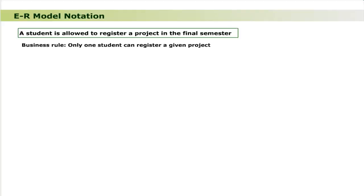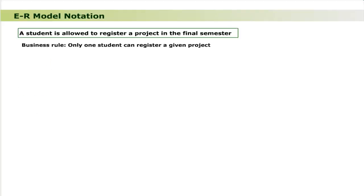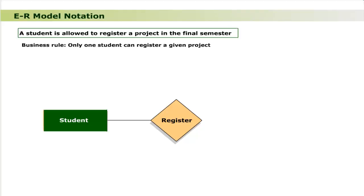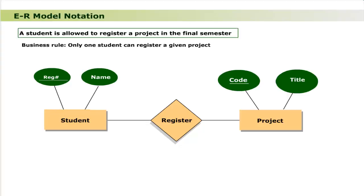There are two entity classes: Student, with attributes registration number (primary key) and name; and Project, with attributes code (primary key) and title. This situation can be represented in an ER model as shown. The relationship 'register' acts as glue through straight lines to connect entity class Student (with attributes registration number and name) to entity class Project (with attributes code and title).